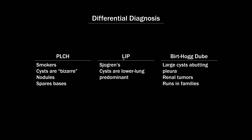LIP is usually associated with connective tissue disease, most closely Sjögren's, though also lupus. The main differentiator from LAM is that cysts are lower lung predominant in LIP. Finally, Birt-Hogg-Dubé is a rare cystic lung disease with lower lung predominant cysts that are larger and abut the pleura. It's a familial disease associated with renal tumors — even if no renal tumors are visible, family members will often have them, which is a clue to Birt-Hogg-Dubé.